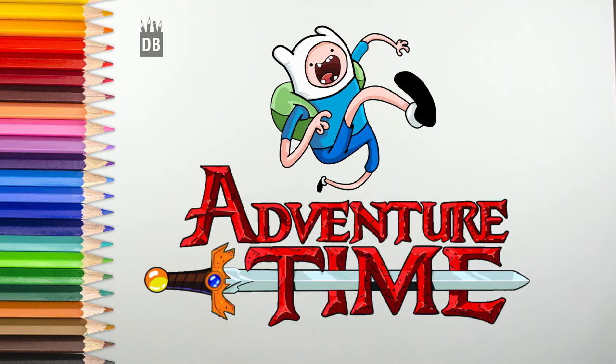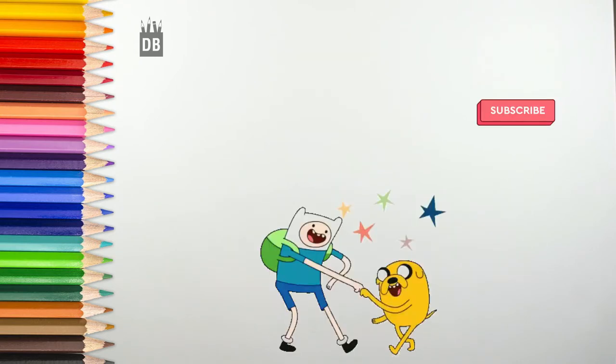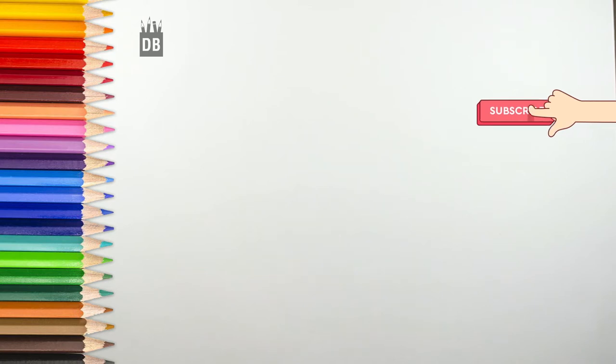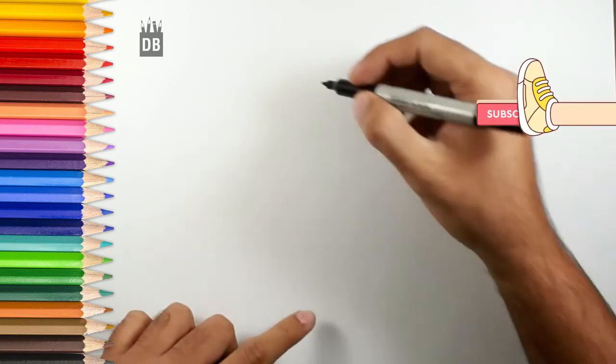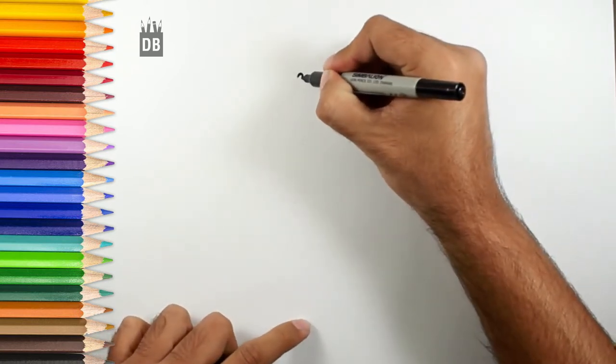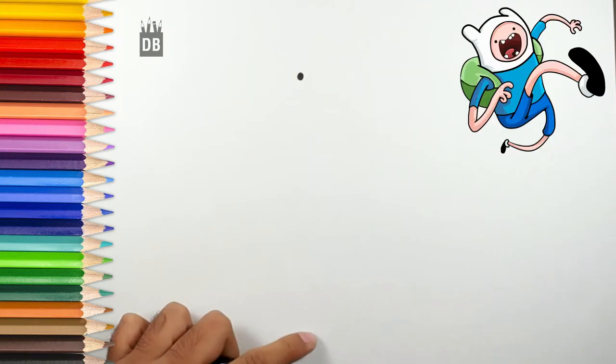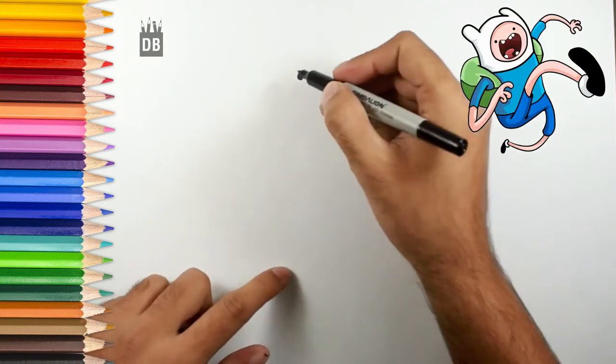Welcome to Drawing Box Studio. Today we are going to make Finn from Adventure Time and let's start. We will start from his eyes and it will give us an idea. A nice round, and a little far from the first eye.